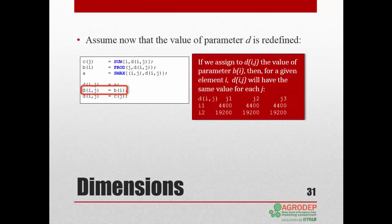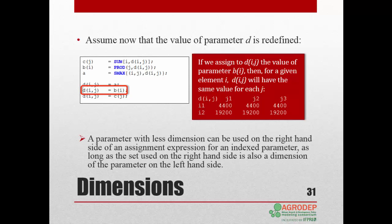Here we assign to dij the value of parameter bi. Then all the columns j of d will be the same. In an assignment expression, you could have a parameter with less dimension on the right-hand side than on the left-hand side, as long as the set used on the right-hand side is also a dimension of the parameter on the left-hand side.